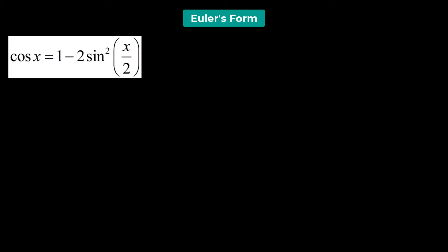We have the identity: cosine of x equals 1 minus 2 sine squared (x over 2). Let's try to prove this particular identity using Euler's form. We begin from the right hand side.